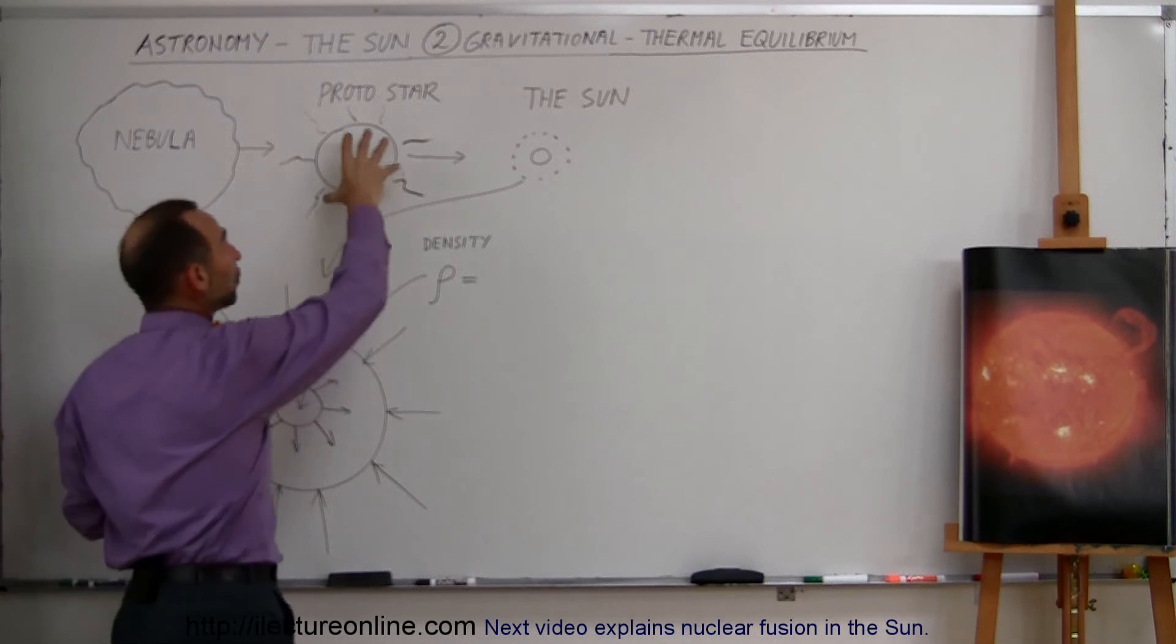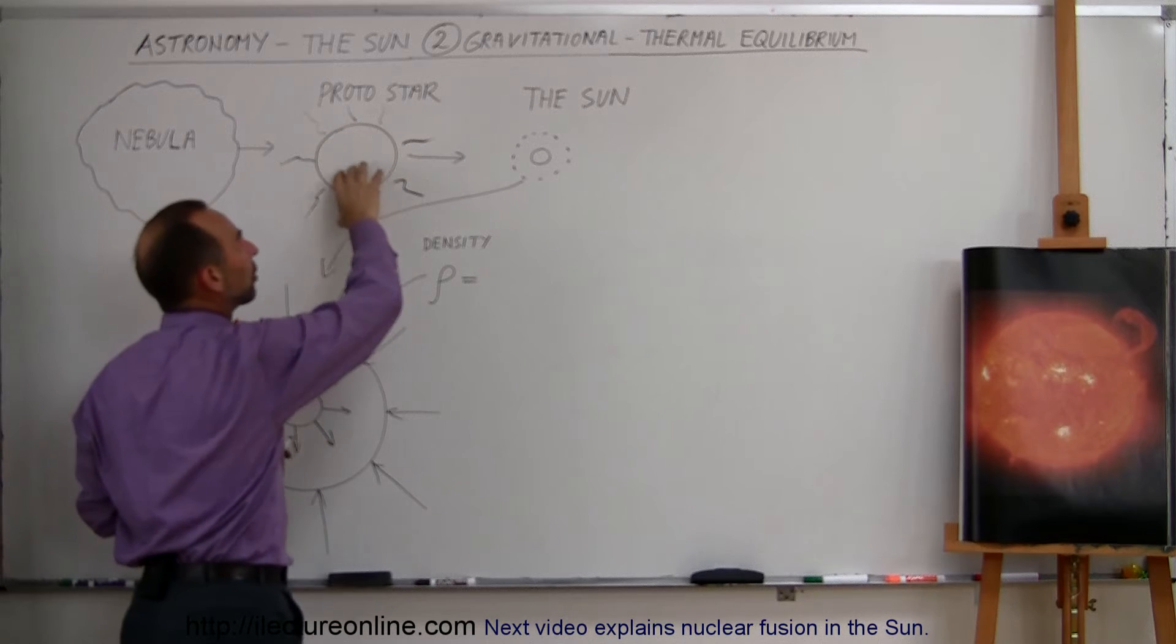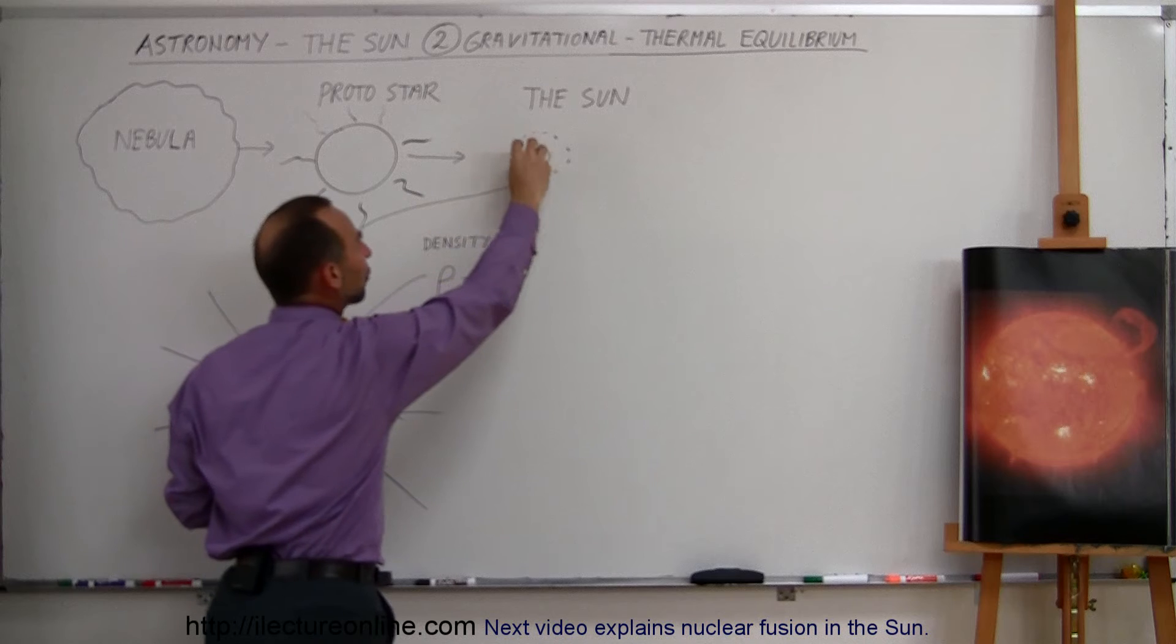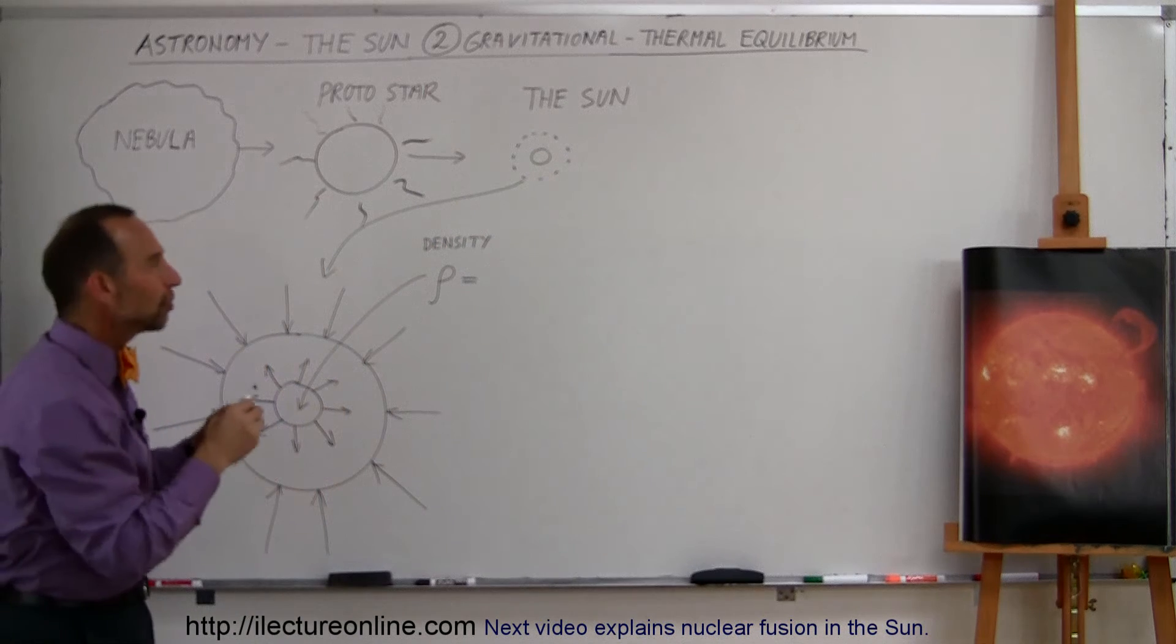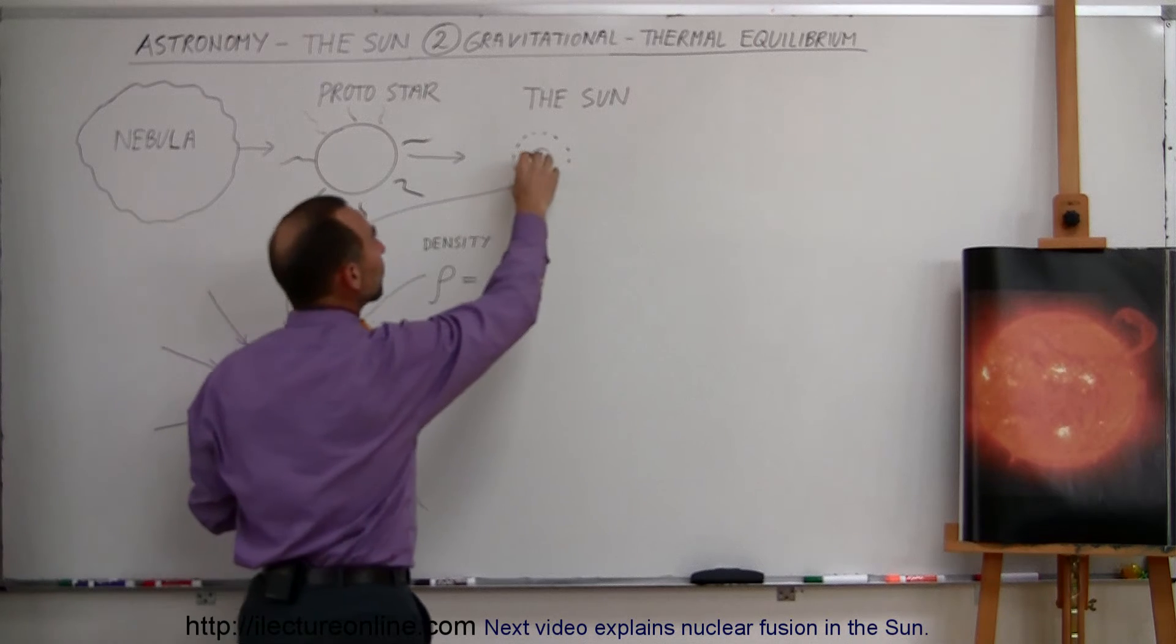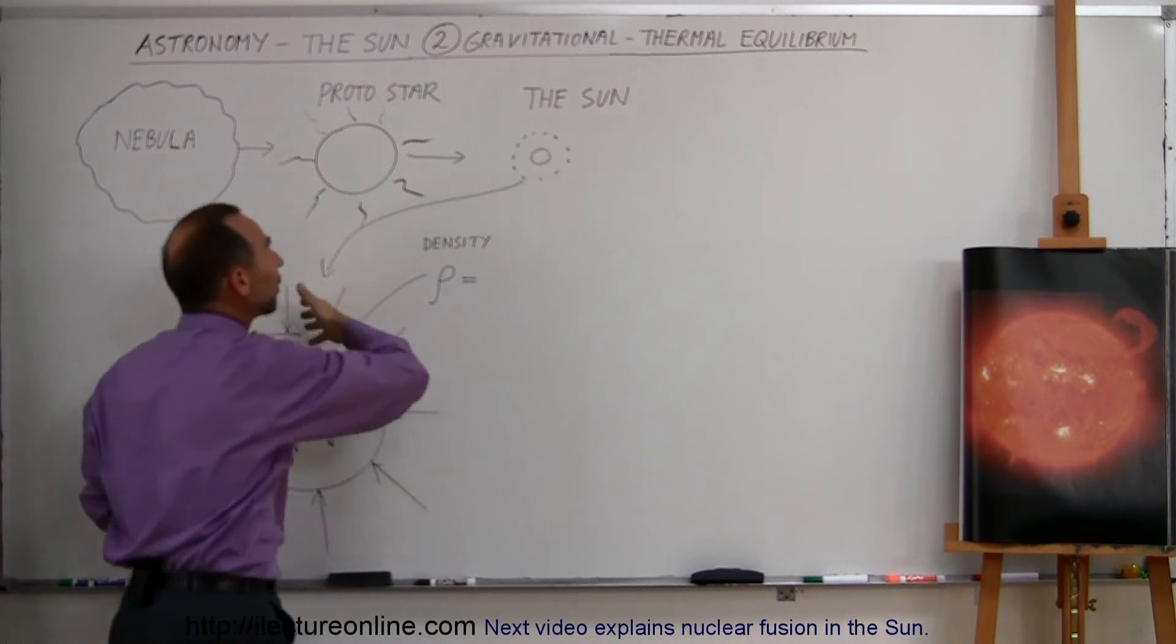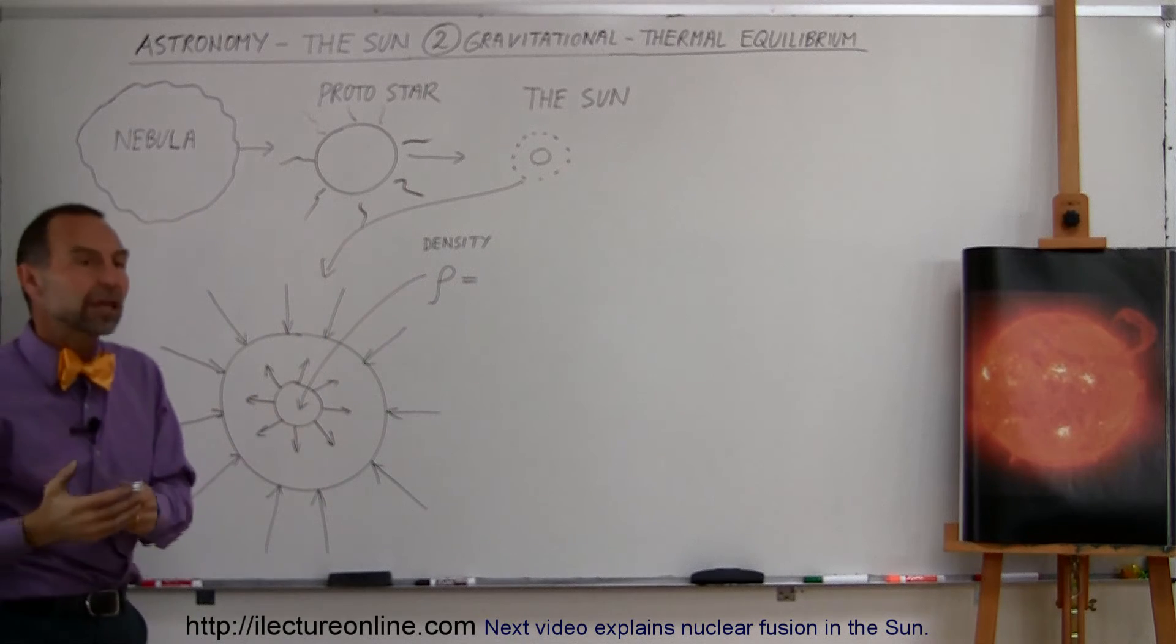Now, what then happened was gravity continued to collapse the star, and eventually the star came down to the point where the density and the temperature at the center of the star became so hot that nuclear fusion began. And so once nuclear fusion began, we then got into a state where we can call it the gravitational thermal equilibrium state of a star.